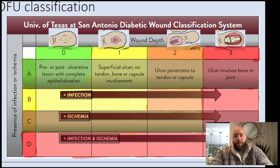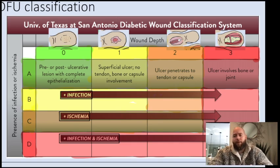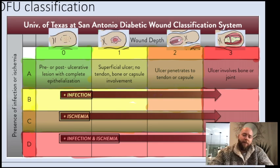If you go one layer deeper, you get to muscle, so the ulcer penetrates to a tendon or a capsule. And then another layer deeper, the ulcer involves the bone or the joint. This system is based on anatomic layers.